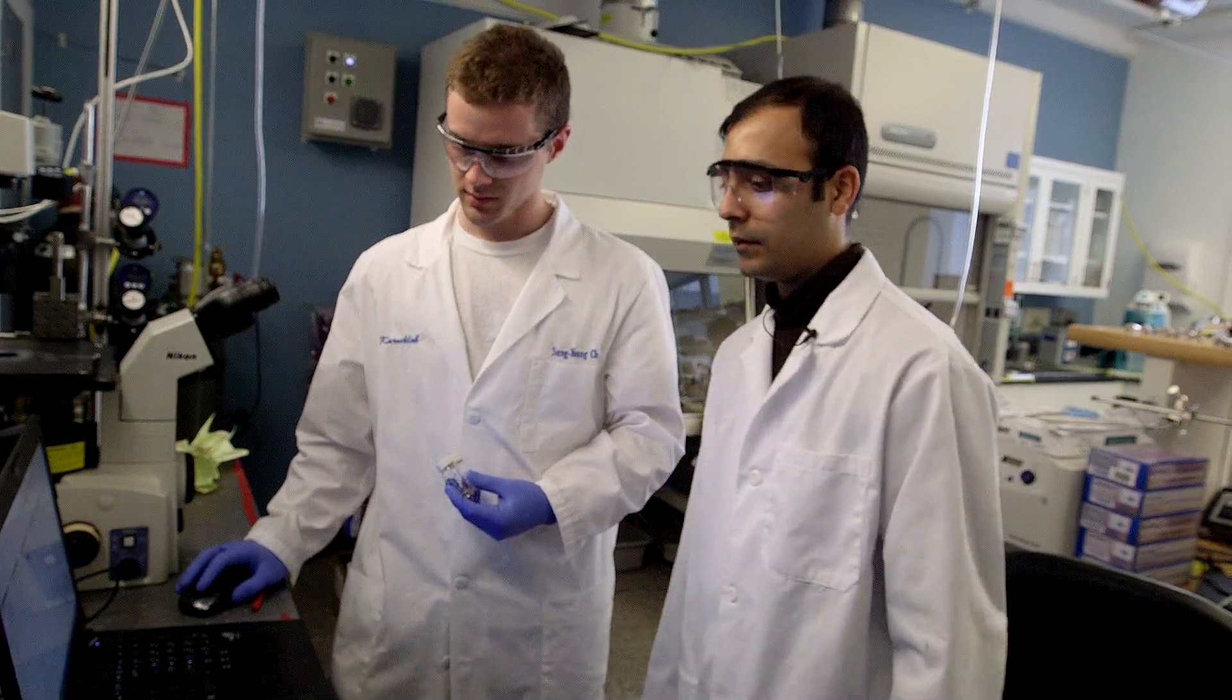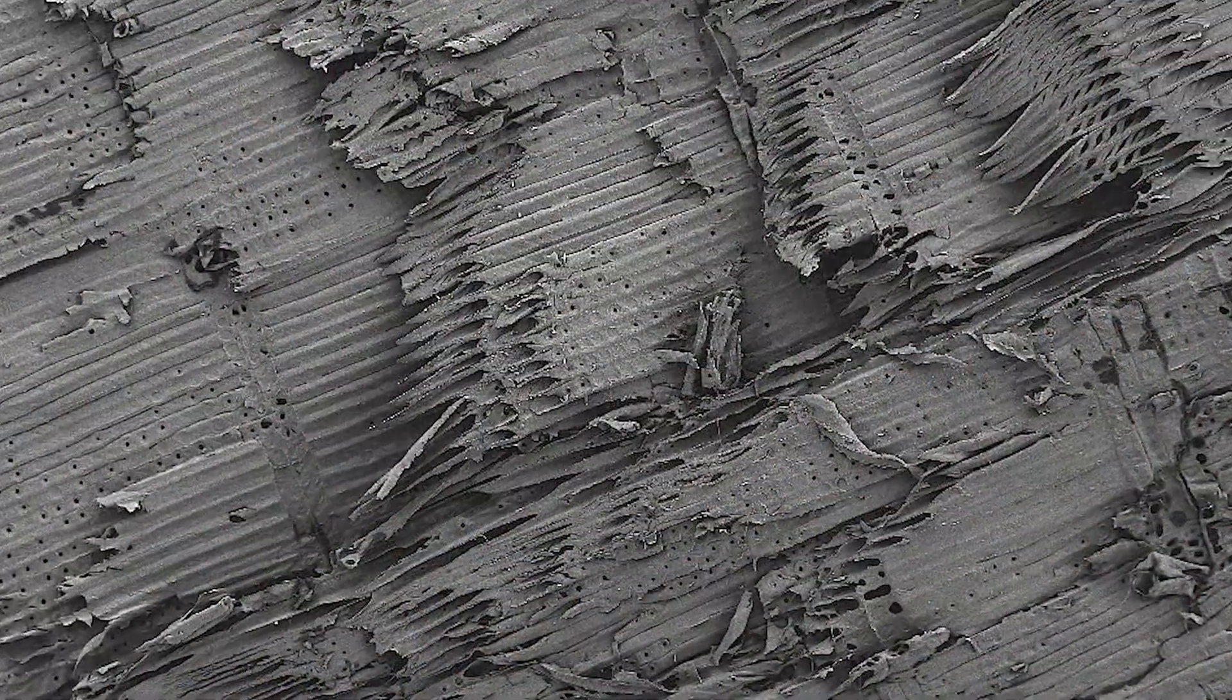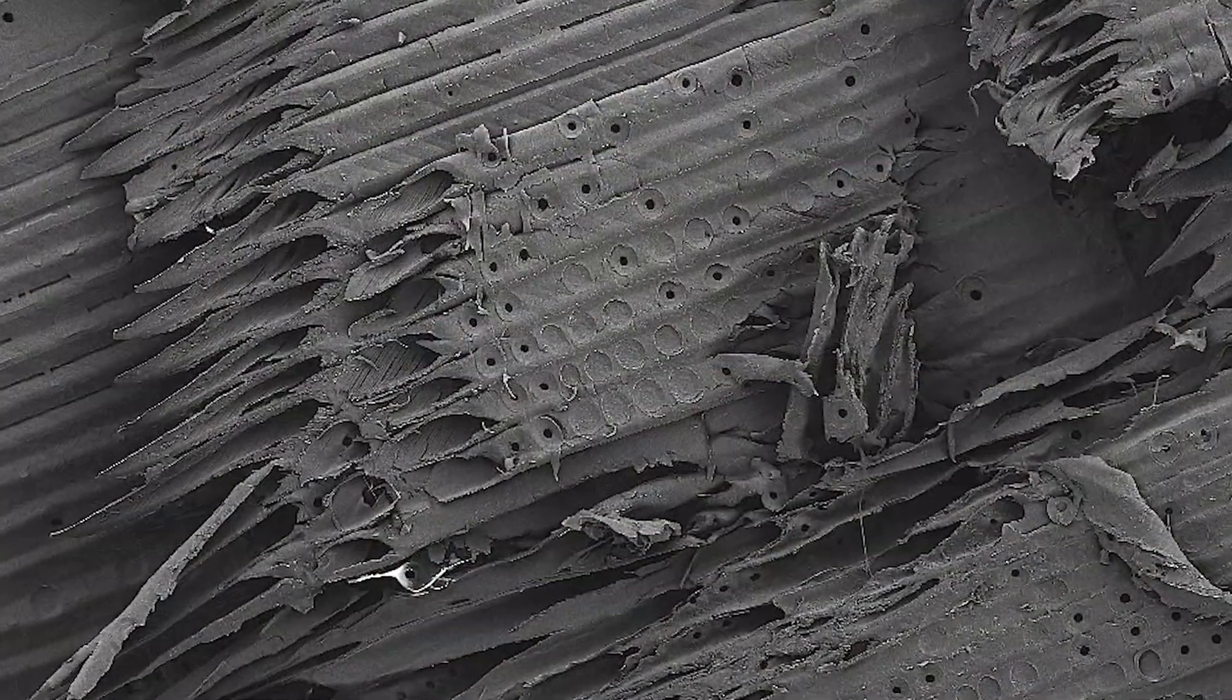So how this works is that the xylem tissue in plants consists of these membranes which have these really tiny pores big enough to allow water to flow through the xylem. But they block the passage of larger particles.